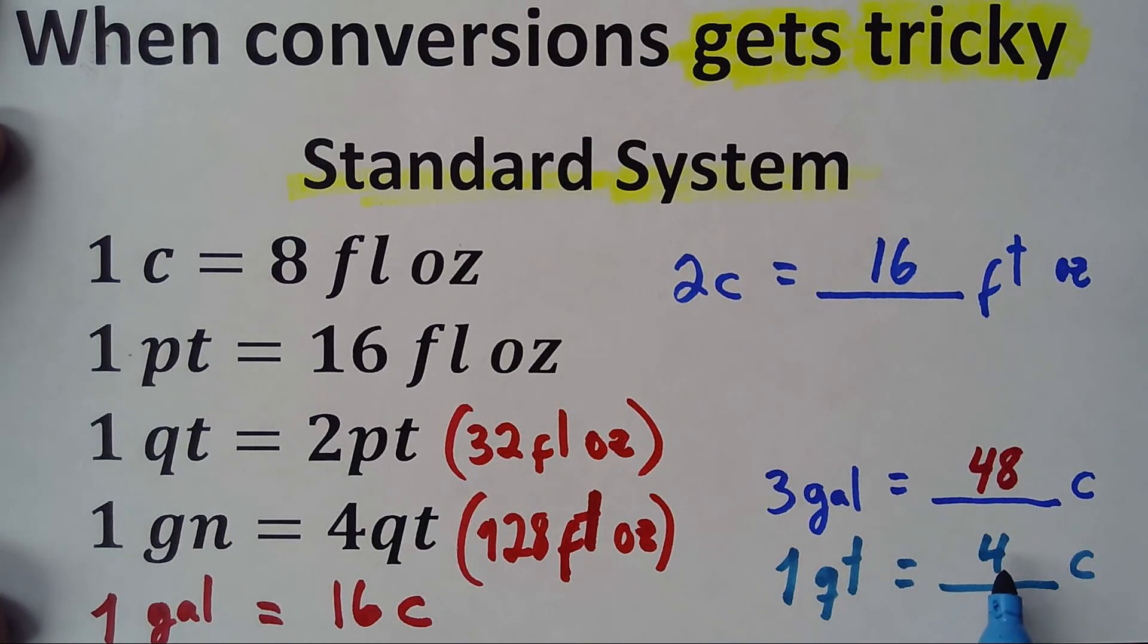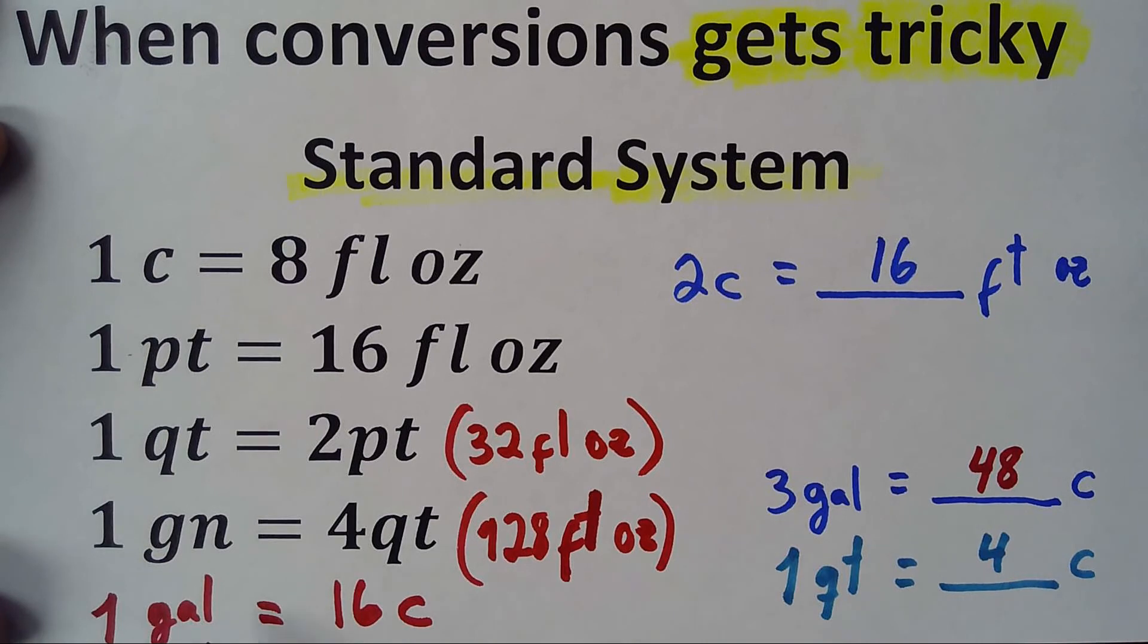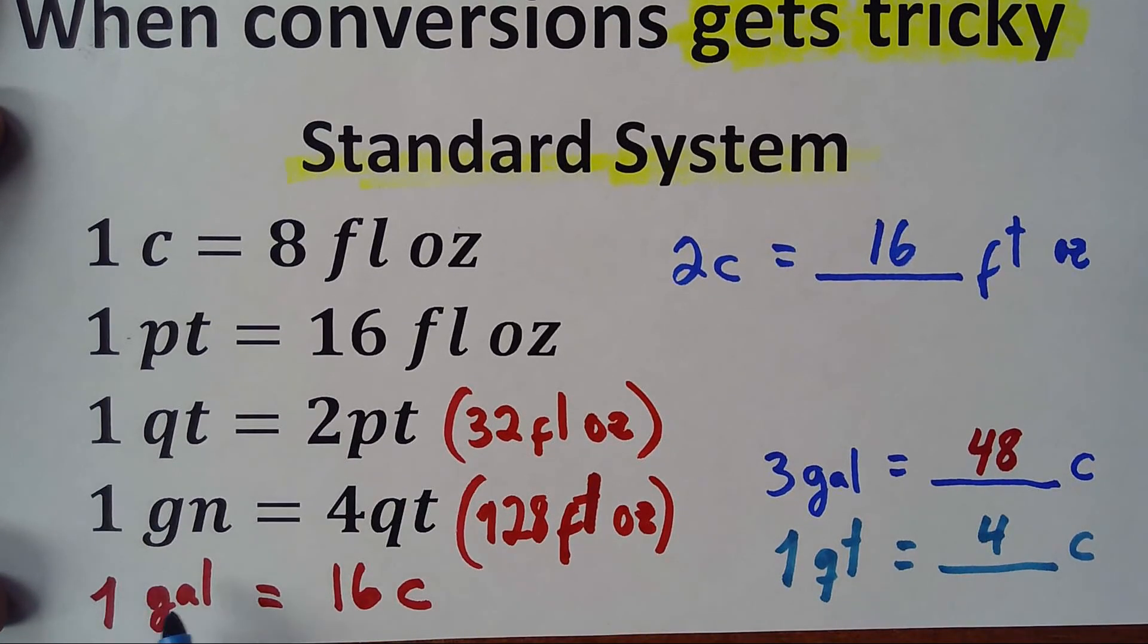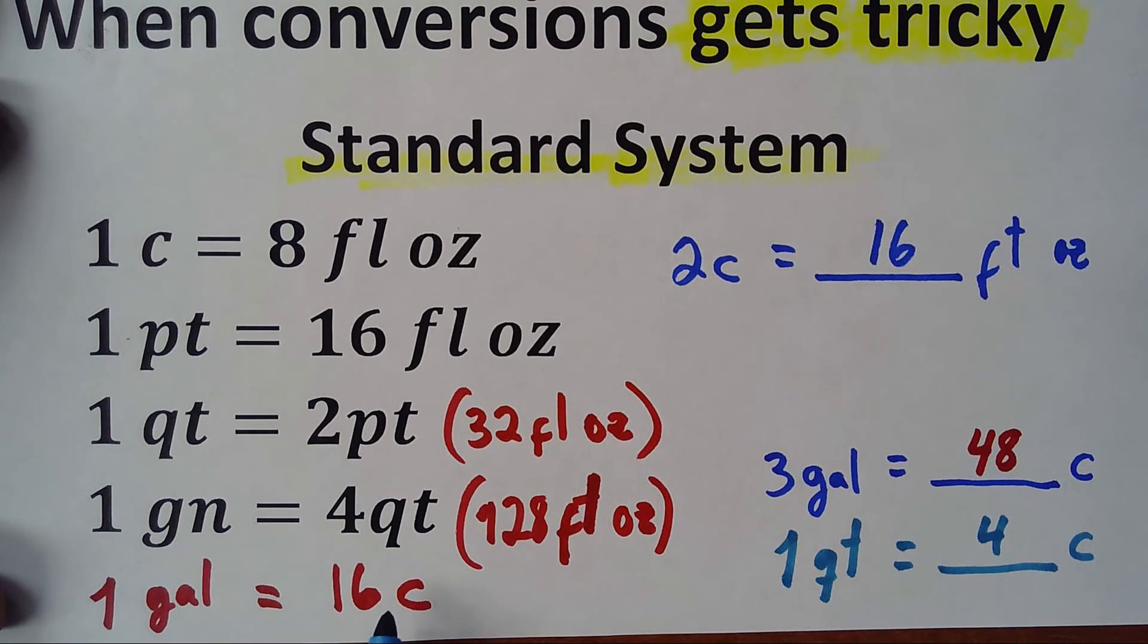Another way to do it - once I have one quart equals four cups, I know that one gallon has four quarts. So if one quart has four cups, four quarts will be 16 cups. That's another way to confirm that one gallon is 16 cups.